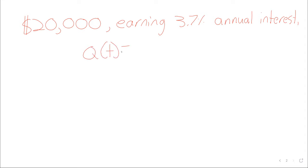So these examples always sort of excite my class resentment. But if you have a $20,000 investment earning 3.7% annual interest, then the value of the investment after t years is that initial investment times 1. Here, let me go ahead and write it. Let's look at 1 plus the growth rate raised to the power of t.